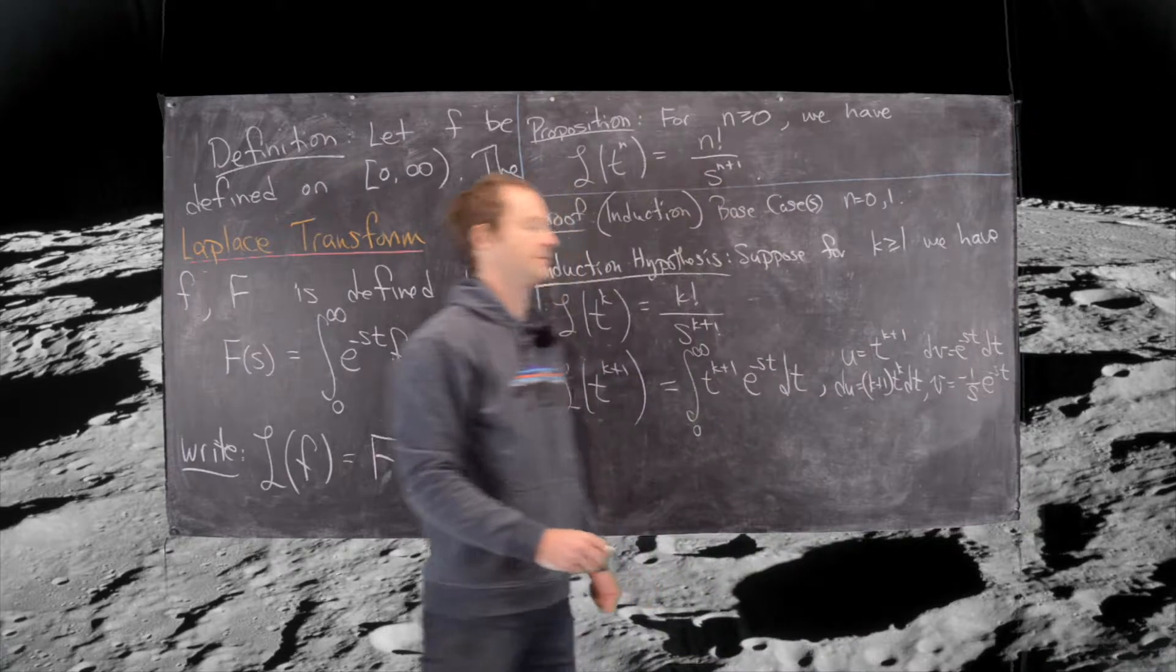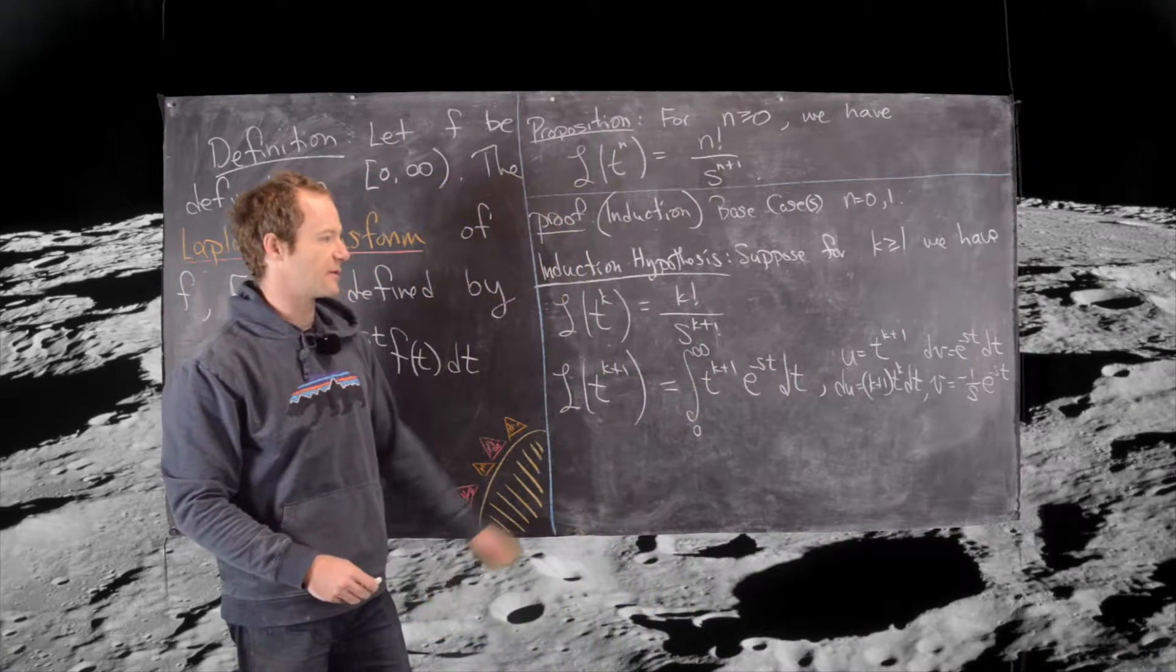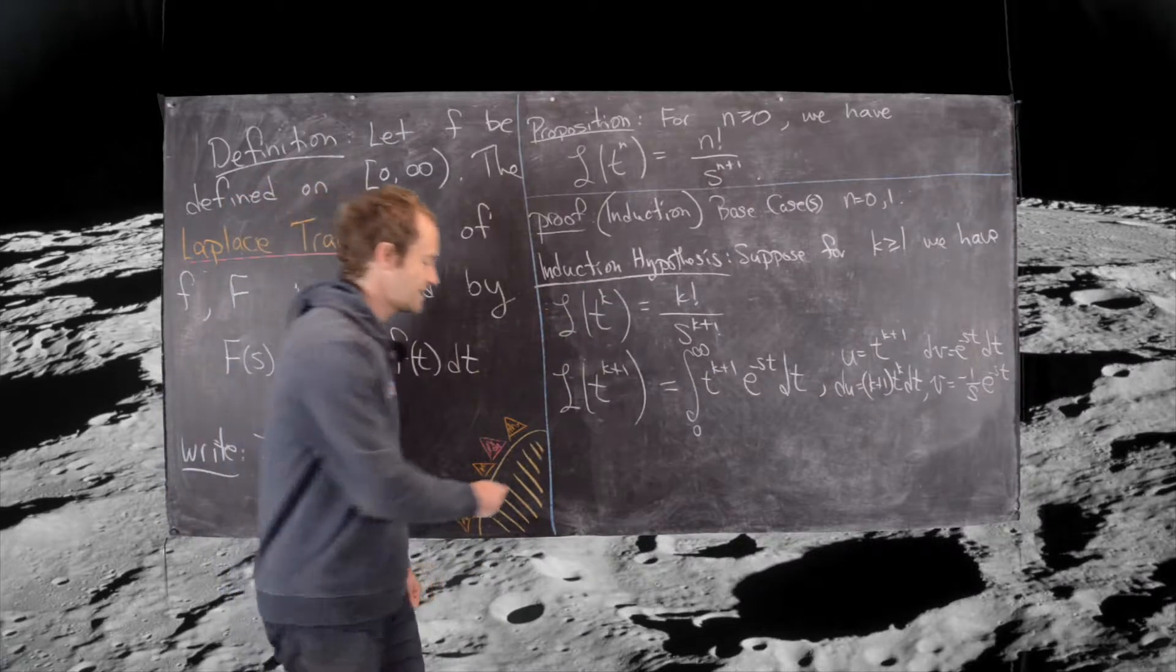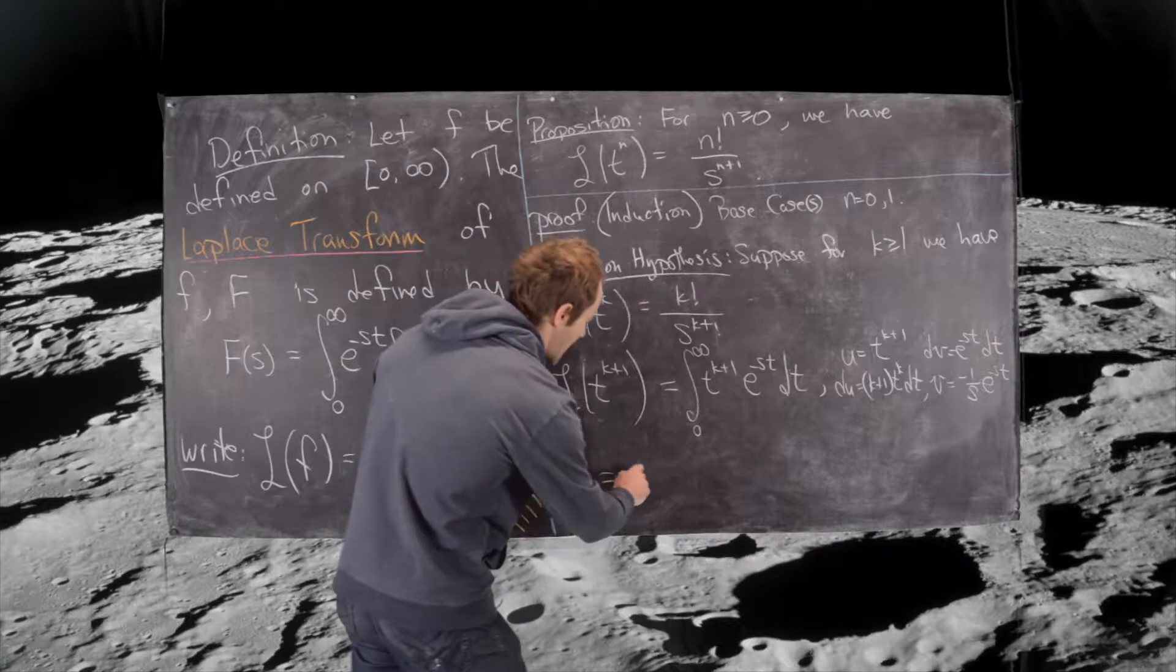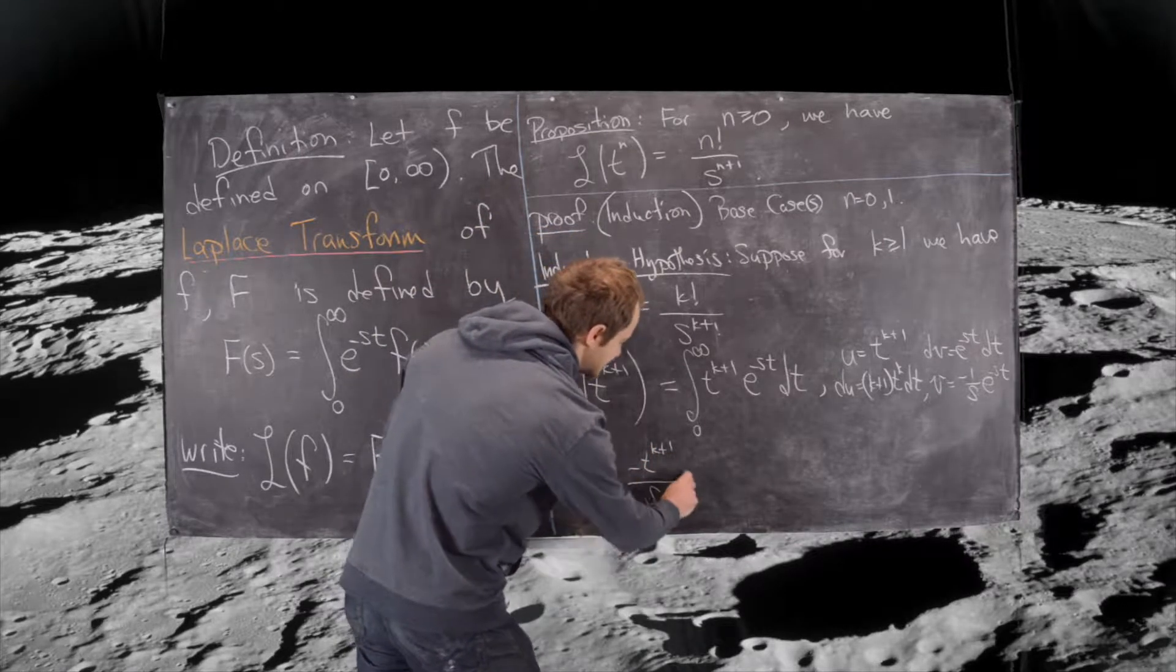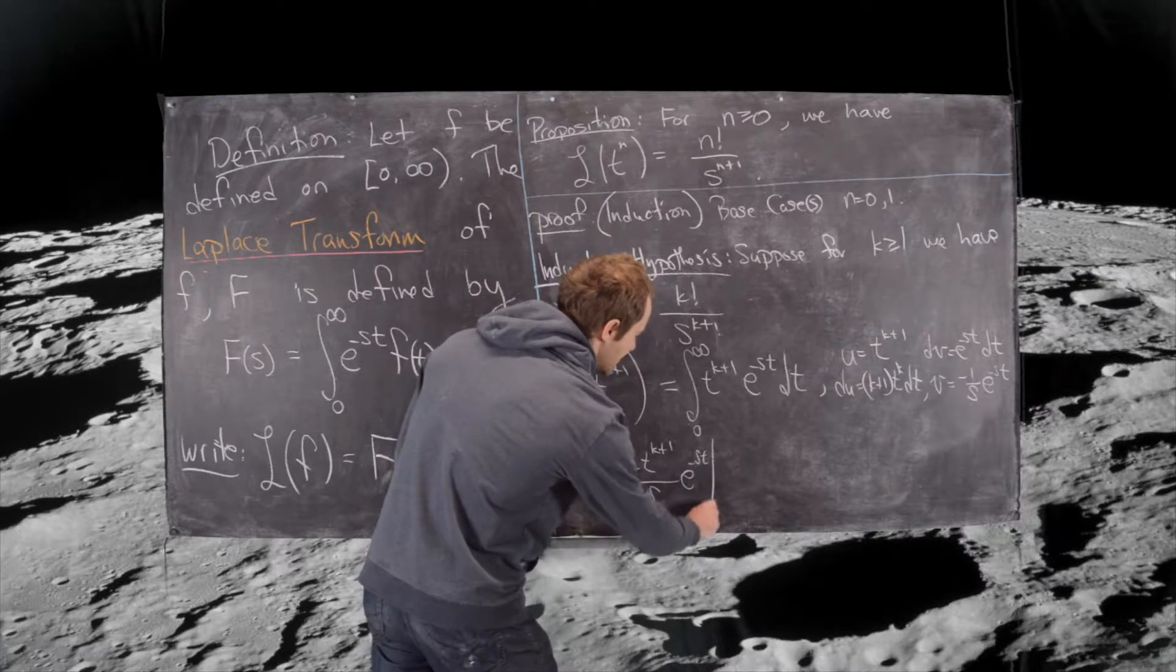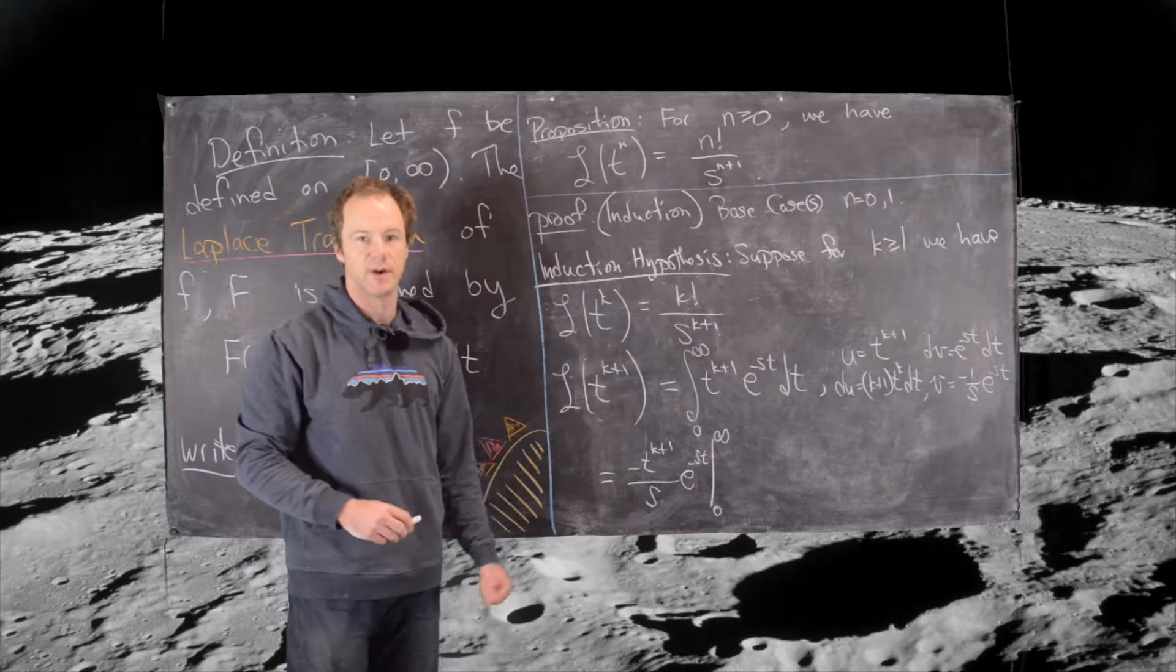Okay great, now we can use our integration by parts formula. That'll be u times v, so that will be minus t to the k plus 1 over s times e to the minus st, and we're evaluating that from 0 to infinity.